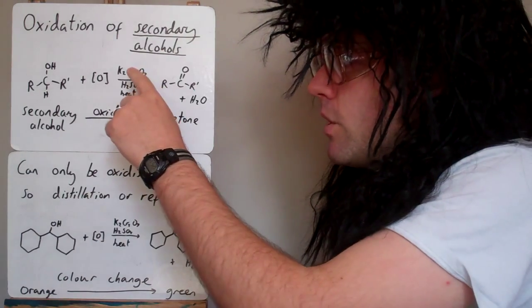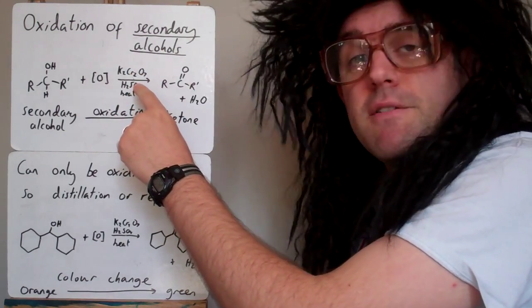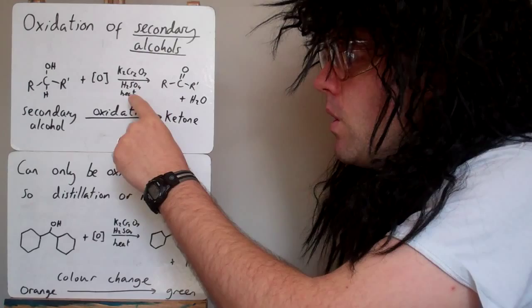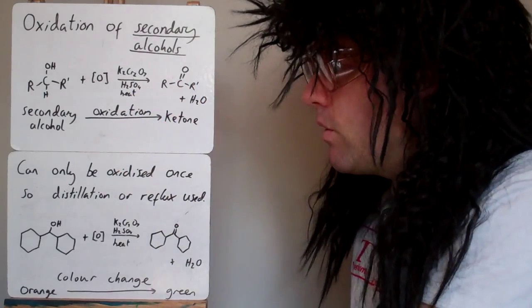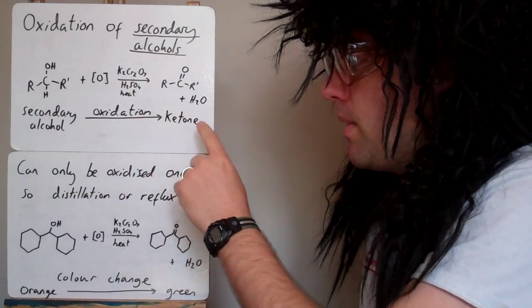We use potassium dichromate in acidified conditions with H2SO4, heat it and get a ketone. All secondary alcohols when oxidized make ketones.